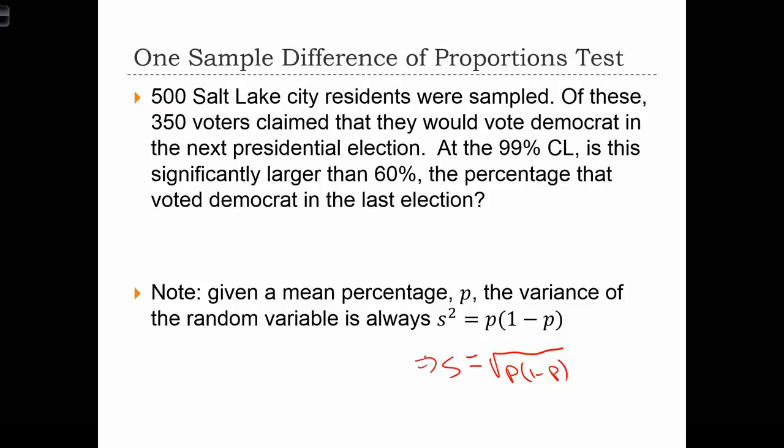In this case, P is the proportion of the sample who voted Democrat. So in this case, the proportion is 350 over 500, which is equal to 0.7.